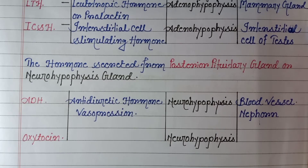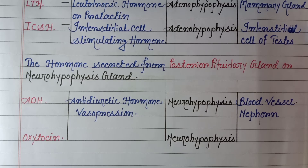Now let's talk about the hormones secreted from the posterior pituitary gland, or neurohypophysis. Basically, two types of hormones are secreted from the neurohypophysis. First is ADH, that is antidiuretic hormone, also known as vasopressin. It is secreted from the neurohypophysis and the target organs are blood vessels or nephron. The second is oxytocin, also secreted from the neurohypophysis, and this hormone helps with the secretion of milk.